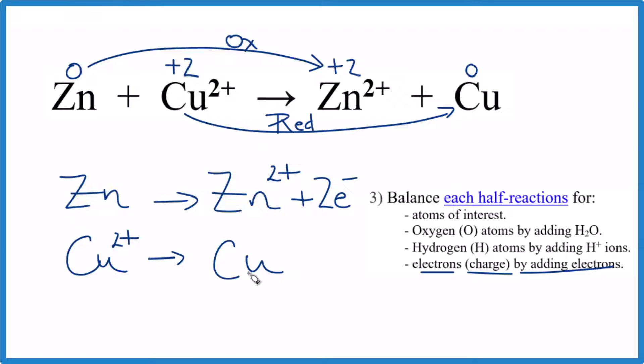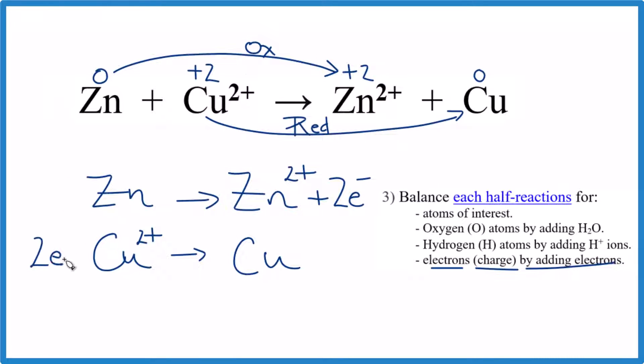Over here, it's neutral. We have a two plus. Let's add two electrons. Now that's balanced. And we've balanced the half reactions.